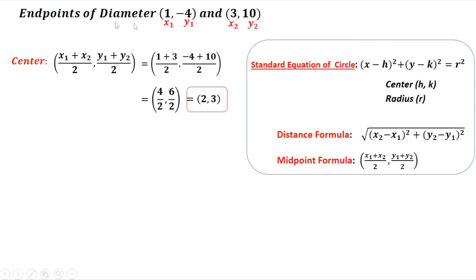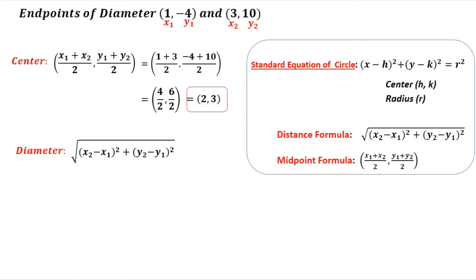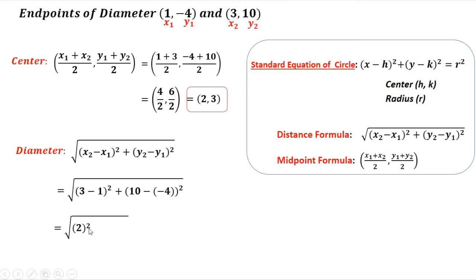To compute the length of the diameter using the distance formula: the square root of (x₂ - x₁)² + (y₂ - y₁)². Substituting the values: (3 - 1)² + (10 - (-4))². Simplifying: 3 - 1 = 2, squared; then the double negative gives positive, so 10 + 4 = 14, squared.